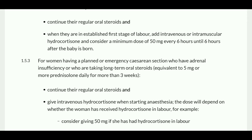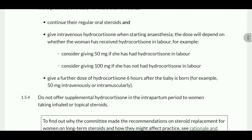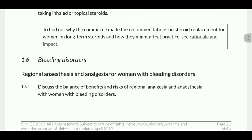For women having planned or emergency cesarean section who have adrenal insufficiency or who are taking long-term oral steroids equivalent to 5mg or more prednisolone daily for more than three weeks: continue their regular oral steroids and give intravenous hydrocortisone when starting anesthesia. The dose depends on whether the woman has already received hydrocortisone: consider 50mg if she has, or 100mg if she has not. Give a further dose of hydrocortisone six hours after the baby is born. Do not offer supplemental hydrocortisone in the intrapartum period to women taking inhaled or topical steroids.